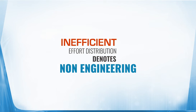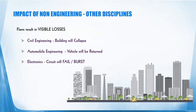Having said this, according to us, any inefficiency in this effort distribution model means non-engineering. When I talk about non-engineering, let us again compare software engineering with other disciplines. In other disciplines like civil, automobile, or electronics engineering, any sort of non-engineering will result obviously in a flaw. These flaws will result in losses which are visible directly or can be measured directly. For example, take civil engineering.